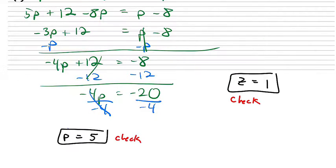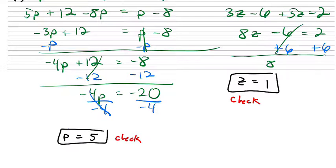I'm going to essentially do the same thing. I'll distribute the 3, so then that becomes 3z minus 6 plus 5z equals 2. On the left I can combine like terms - 3z plus 5z is 8z minus 6 equals 2. I can add 6 to both sides, cancel, I get 8z equals 8.